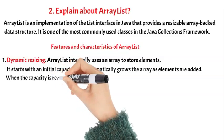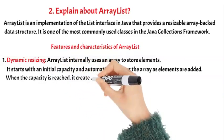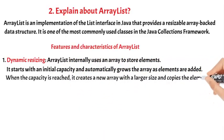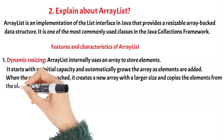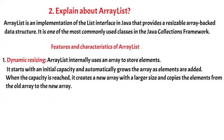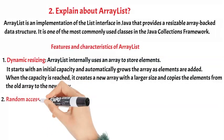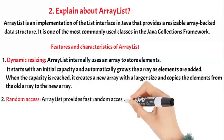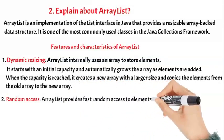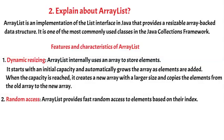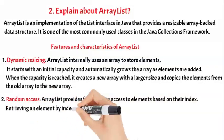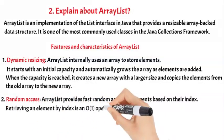When the capacity is reached, ArrayList creates a new array with a larger size and copies the elements from the old array to the new array. Key feature 2: Random Access — ArrayList provides fast random access to elements based on their index. Retrieving an element by index is an O(1) operation.